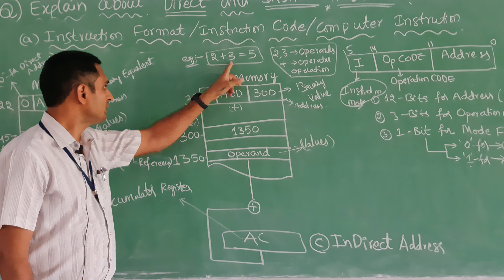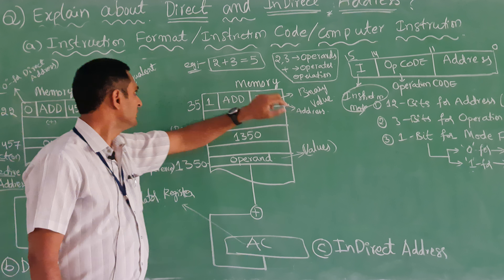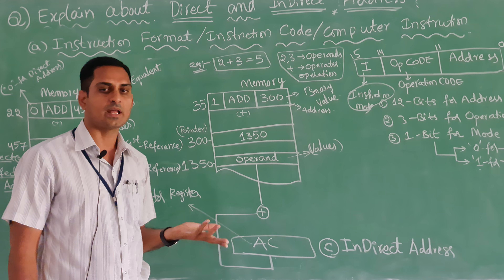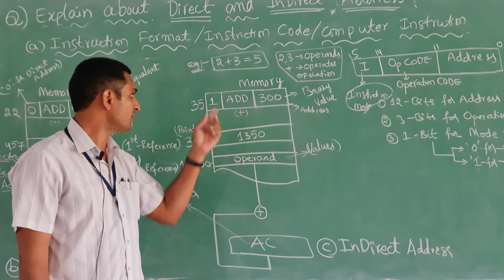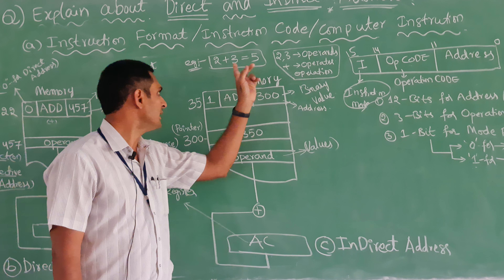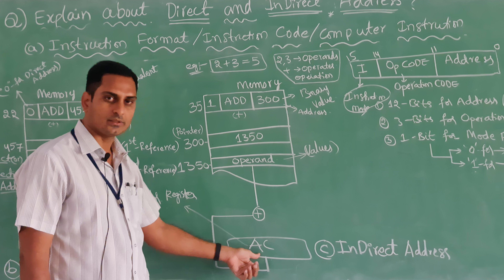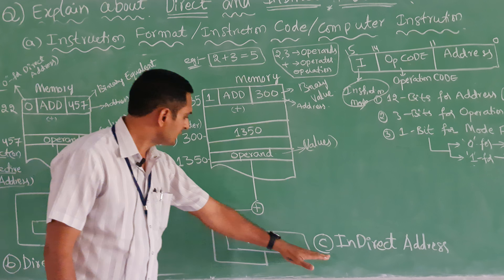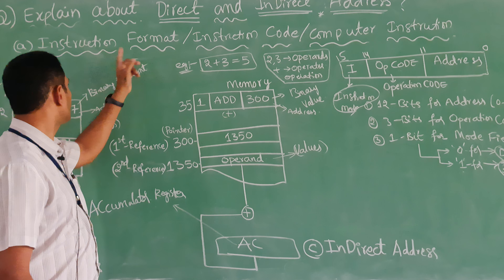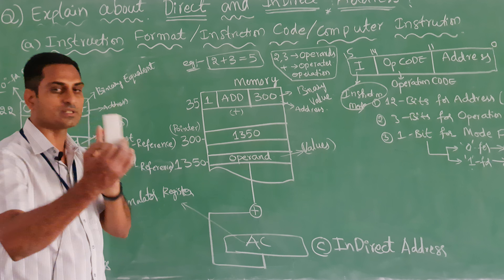To understand operands: take 2 plus 3 equals 5. Here 2 and 3 are called operands, and the plus is called the operator. You can also use subtraction or multiplication. In this example the operation is addition and the result will be stored in the accumulator. This instruction format with three fields is the basic structure you need to know.